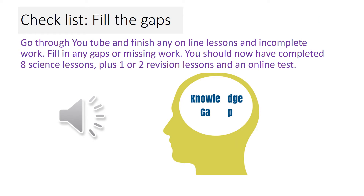What I want you to do is go through YouTube, show my homework, and finish all the online lessons and experiments. We are filling in any gaps in knowledge or missing work. You should now have completed eight science lessons, plus one or two revision lessons — one if you had Bank Holiday Friday off because you had a lesson on that, or two if you had a normal timetable that started on a Monday. So eight lessons, one or two revision lessons, and then obviously the online test.